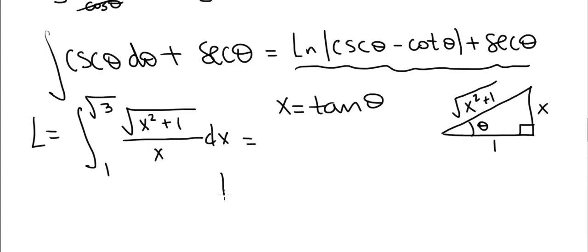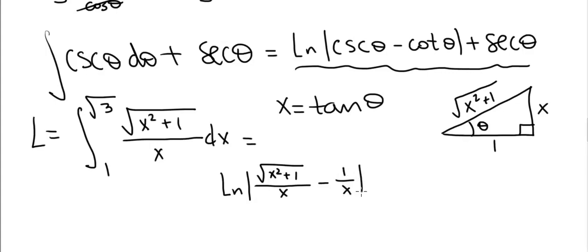We express the antiderivative in terms of x. Cosecant = 1/sin = hypotenuse/opposite = √(x² + 1)/x. Cotangent = adjacent/opposite = 1/x. Secant = hypotenuse/adjacent = √(x² + 1). So the antiderivative becomes ln|√(x² + 1)/x − 1/x| + √(x² + 1), evaluated from 1 to √3.